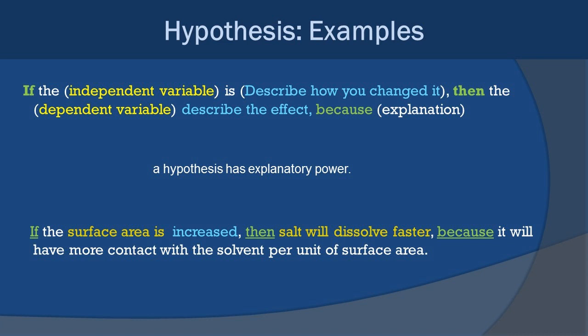Remember that a hypothesis has explanatory power. It's trying to tell you why it thinks something is going to occur the way it's going to occur. The example below states if the surface area is increased, then salt will dissolve faster, because it will have more contact with the solvent per unit of surface area. In this example, we're basically looking at the size of salt grains. The larger the chunk of salt, the less surface area per unit volume you have. And thus water, which dissolves the salt, has less access. Reversely, if the salt grains are very small, they have a very high surface area to volume ratio, and thus the solvent, water, is going to act on them much more quickly. This is an example of a hypothesis with explanatory power.